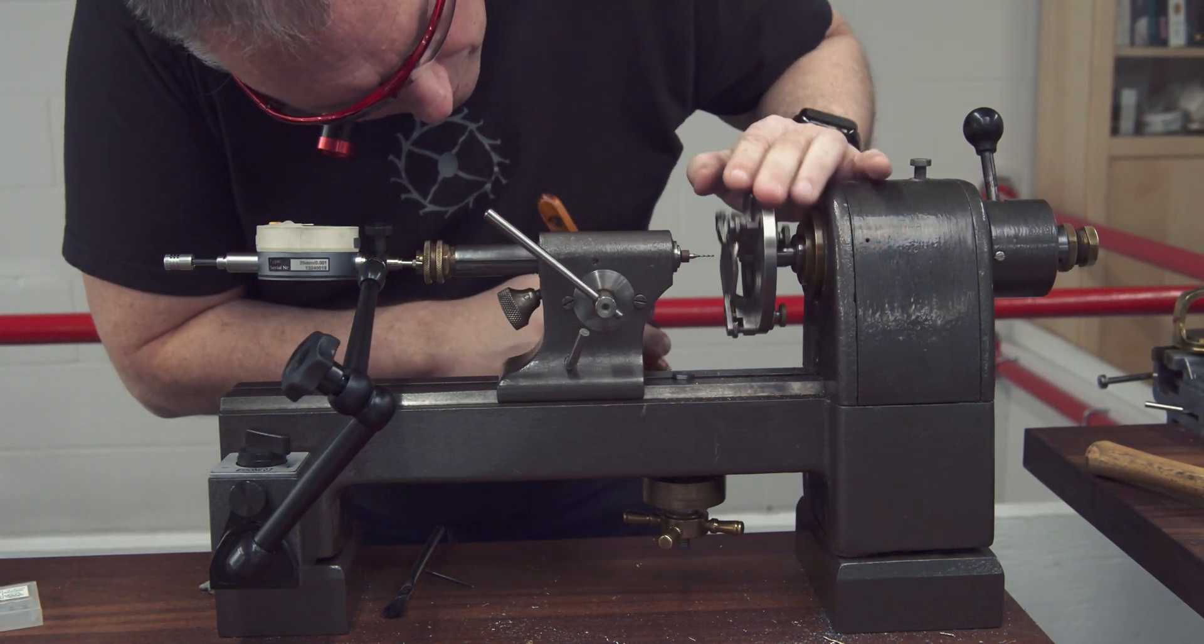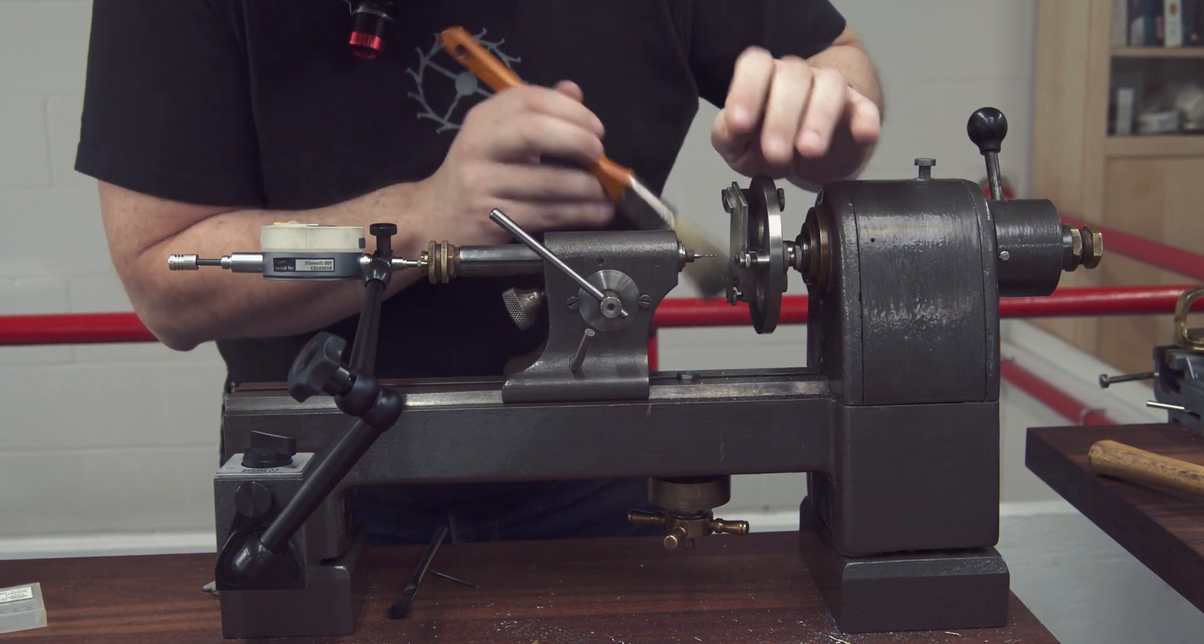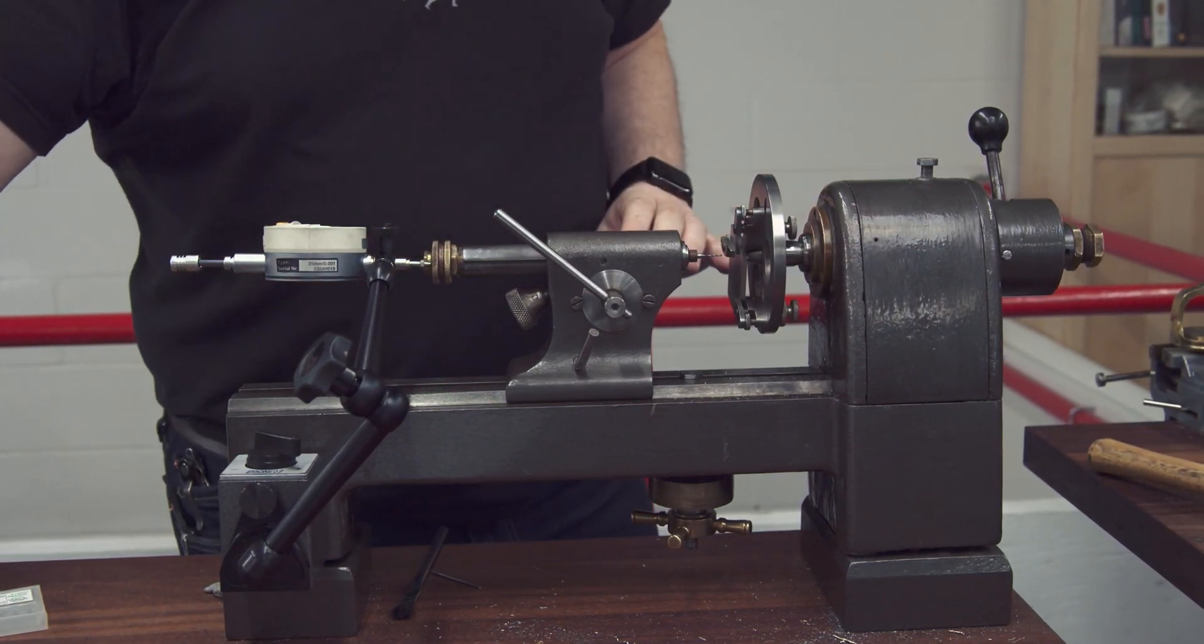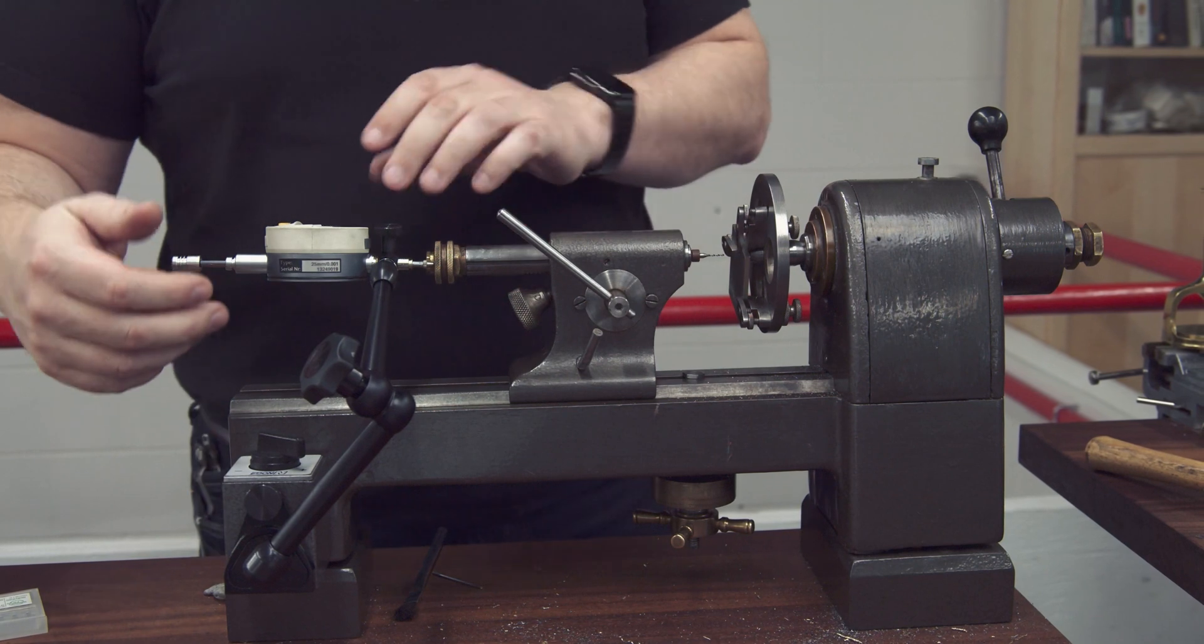Once that hole's been drilled we can move the plate onto the next hole and use the wobble stick to center the next point on the lathe.